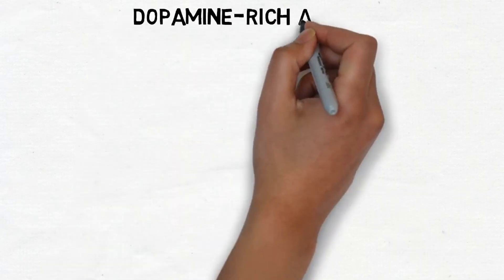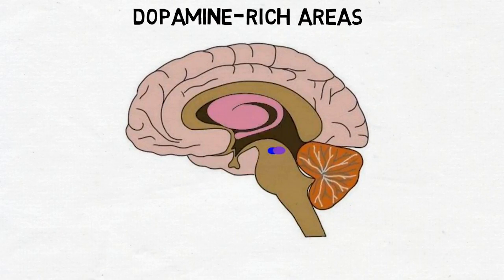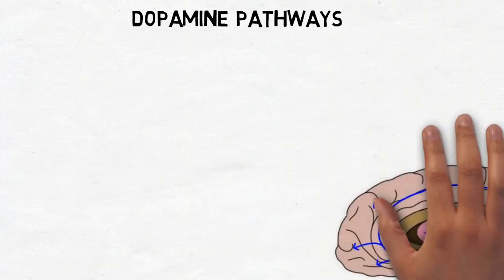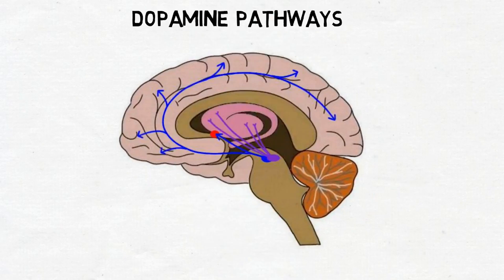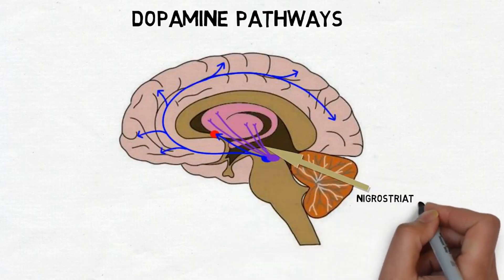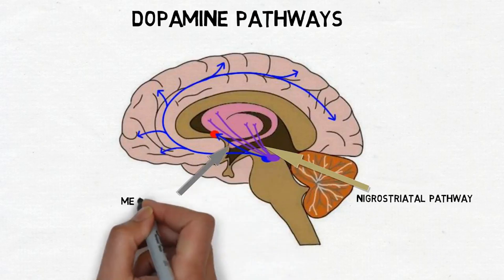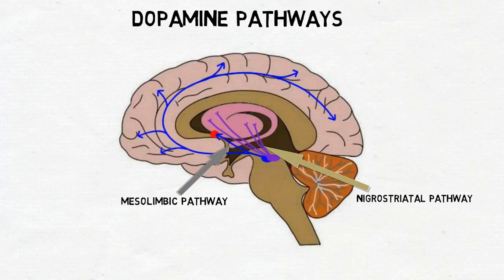There are several areas of the brain where dopamine neurons are concentrated. The largest are the substantia nigra and the ventral tegmental area in the midbrain. Other areas include the hypothalamus, olfactory bulb, and retina. There are several major dopamine pathways: the mesostriatal pathway, which stretches from the substantia nigra to the striatum; the mesolimbic pathway, which stretches from the ventral tegmental area to the nucleus accumbens and other limbic structures; and the mesocortical pathway, which stretches from the ventral tegmental area throughout the cerebral cortex.